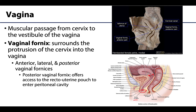Of particular clinical importance is the posterior vaginal fornix. This offers access to the recto-uterine pouch, which is the most inferior extent of the peritoneum in the pelvis, allowing access to the peritoneal cavity if necessary.